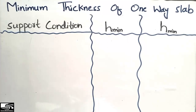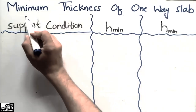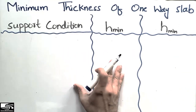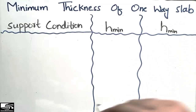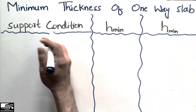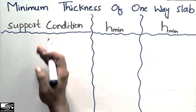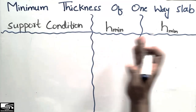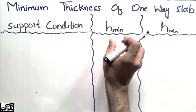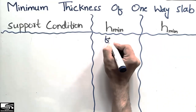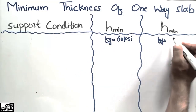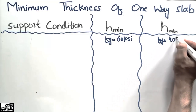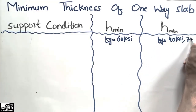Hello guys, welcome back to the C1 Engineering YouTube channel. Today our lecture is about the minimum thickness of the one-way slab. We are going to determine the minimum thickness or depth of the one-way slab for different support conditions. For fy equal to 60 grade of steel we have one set of values, and for other grades such as grade 40 or grade 75, there are different values.